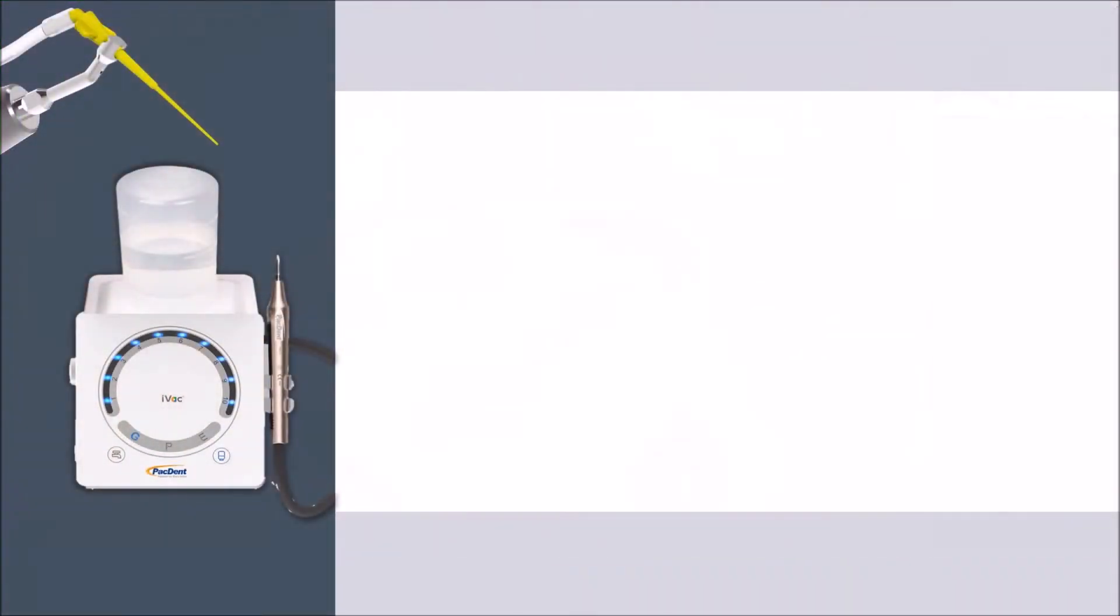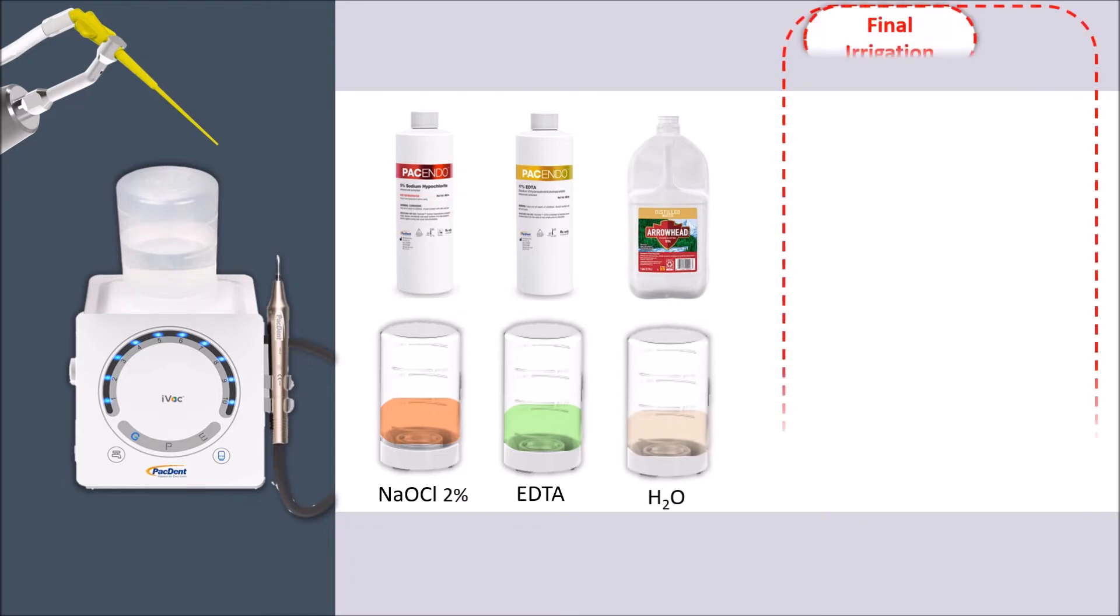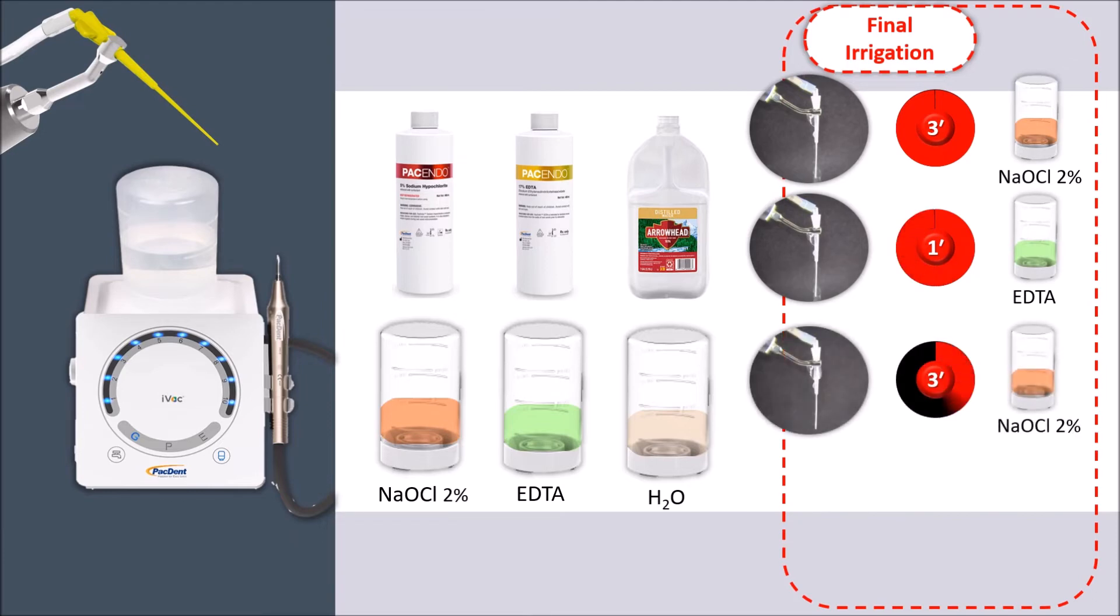The suggested protocol for final irrigation with the iVac uses sodium hypochlorite 2 percent, EDTA, and distilled water. After finalizing instrumentation, activate and flush with the iVac for three minutes with sodium hypochlorite. Next, change the bottle to EDTA and activate and flush for one minute. Change the bottle to sodium hypochlorite and activate and flush for three minutes. Finally, change the bottle to distilled water, activate and flush for one minute.